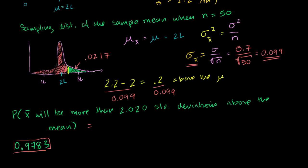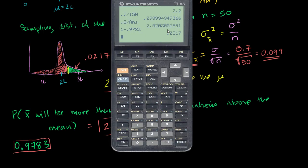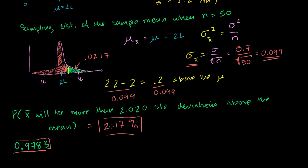So there is a 2.17% probability that we will run out of water. And we are done. It is a 2.17% chance we run out of water.